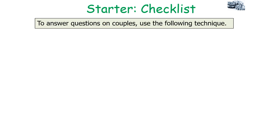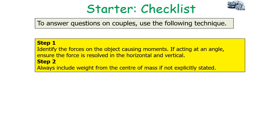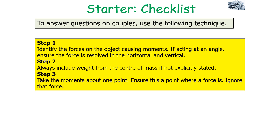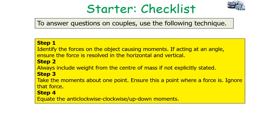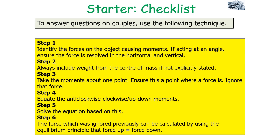To answer questions on couples, use the following technique. First, identify the forces on the objects causing moments, and if acting at an angle ensure the force is resolved into horizontal and vertical components. Second, always include the weight from the centre of mass if not explicitly stated. Then take moments about one point where a force acts and ignore that force. Equate the anti-clockwise and clockwise moments and solve the equation. The ignored force can then be calculated using the equilibrium principle: force up equals force down.